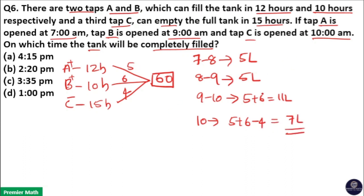Now, you can see from 7 to 10am, how much liter is filled? 5 plus 5 plus 11. That is 21 liters is filled from 7 to 10am.